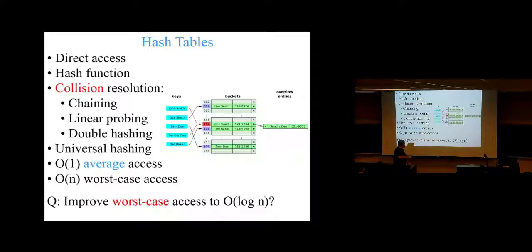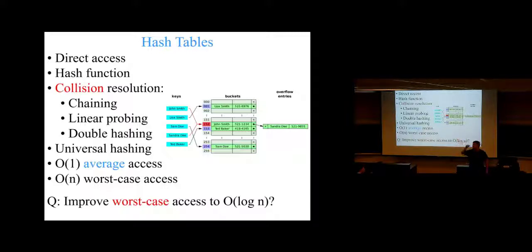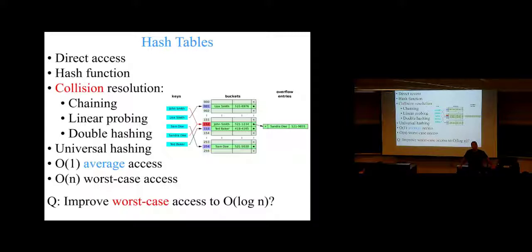How do you improve the worst case to logarithmic for hash tables? I'm here to tell you: you can implement hash tables in a way that keeps the worst case no worse than logarithmic. And that's pretty good, because the average will still be constant time. That's not true in height-balanced trees — in height-balanced trees, both the worst case and the average case are logarithmic.